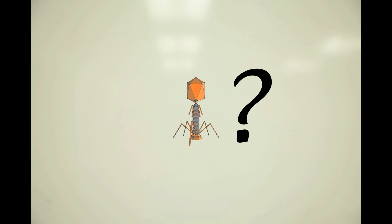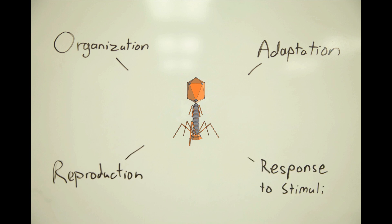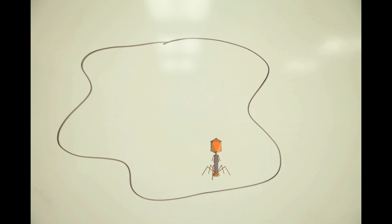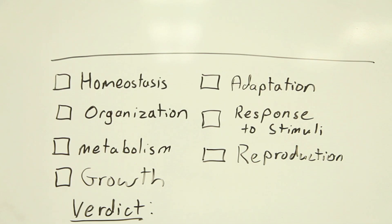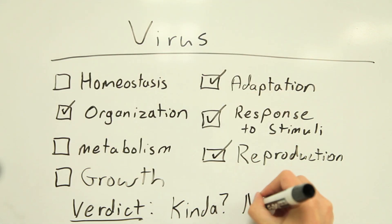For example, are viruses alive? They demonstrate a degree of organization, adaptation, reproduction, and in some cases, a response to stimuli. But is that enough? Does it matter that viruses can't reproduce without the help of a host cell? Or that they aren't truly homeostatic? How many boxes do we need to tick off the list before we can say something is alive?